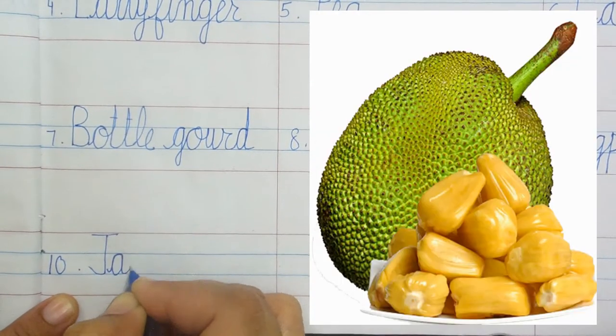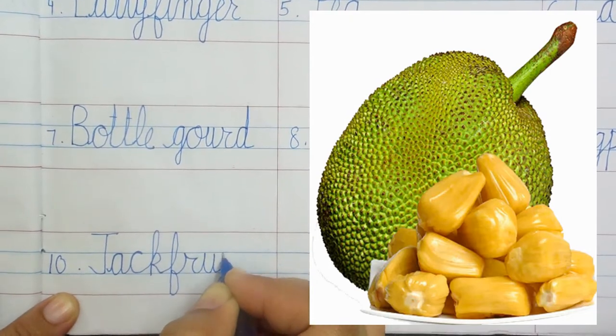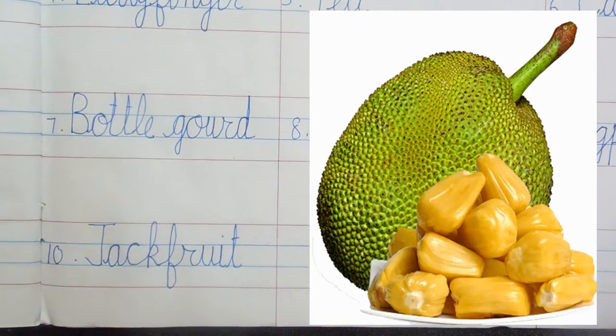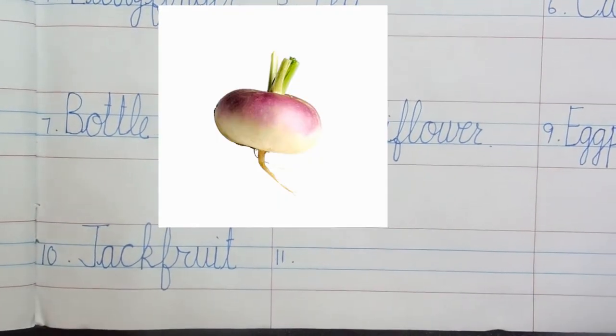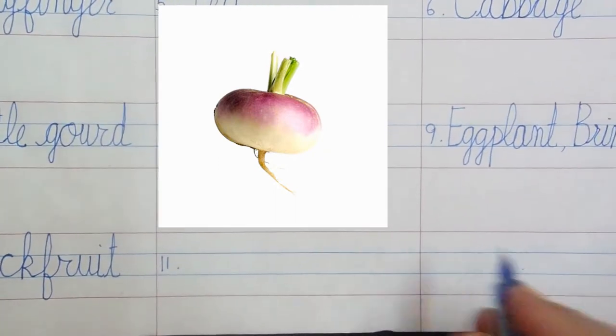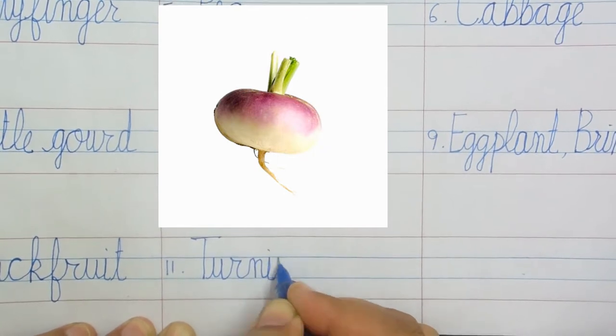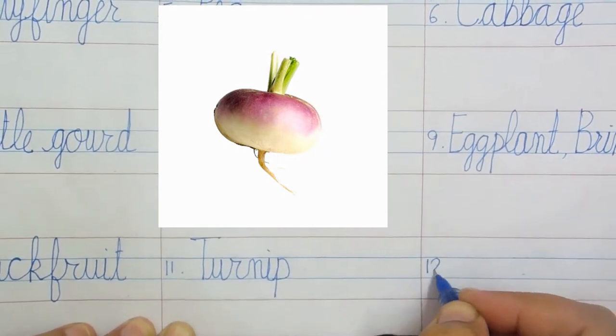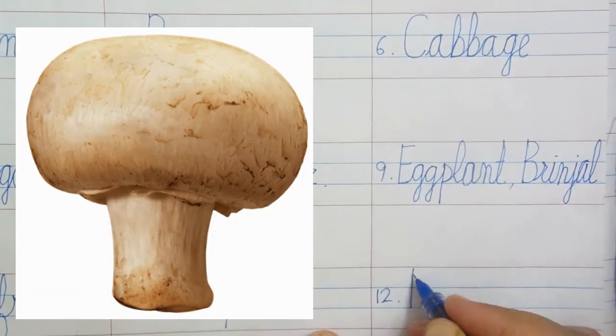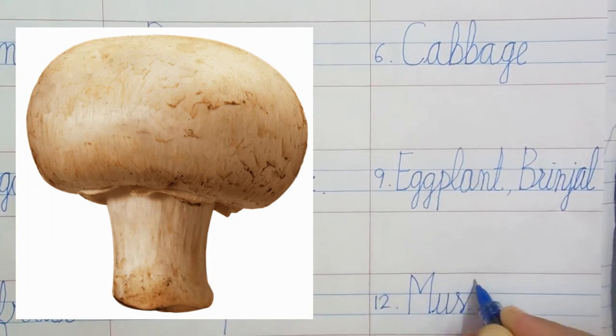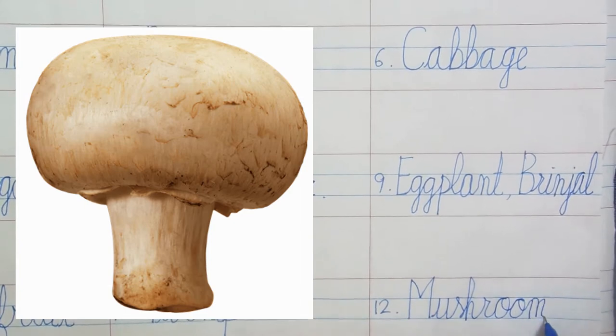Jackfruit: J-A-C-K-F-R-U-I-T, jackfruit. Turnip: T-U-R-N-I-P, turnip. Mushroom: M-U-S-H-R-O-O-M, mushroom.